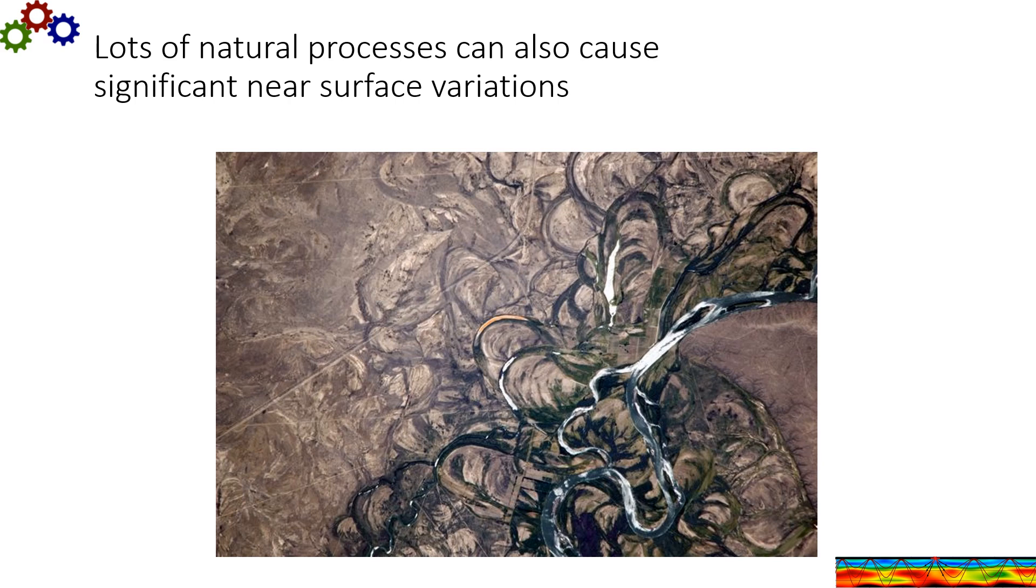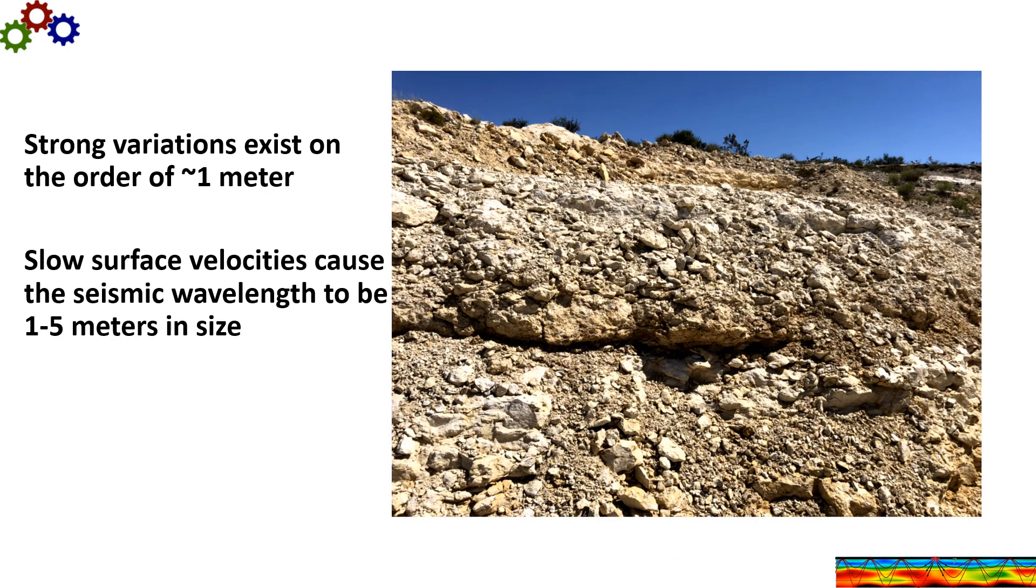Here's a nice satellite picture showing near surface heterogeneity. This is a meandering stream bed, of course. And I want to emphasize that lots of natural processes cause significant variations on all scales.